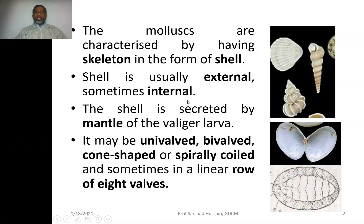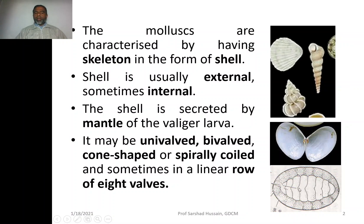The shell may be univalve — having only one valve, one part. It may have two parts, called bivalve. You may have a cone-shaped shell, a spirally coiled shell, or sometimes the shell may have a row of plates, normally eight in number — so they have eight rows of plates, or eight valves.